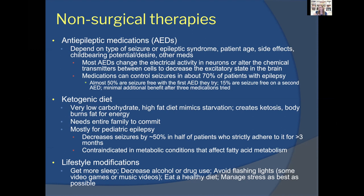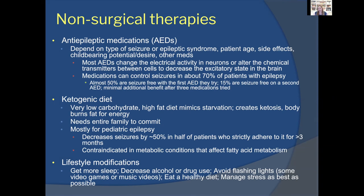If anti-epileptic medications aren't sufficient, the neurologist may offer a ketogenic diet — a very low carbohydrate, high fat diet that induces ketosis by mimicking starvation. It is a very difficult diet to maintain long-term and often requires commitment from the whole family. However, it can be very effective for the right patients: if maintained for at least three months, it can decrease seizures by 50 percent or more in half of patients.